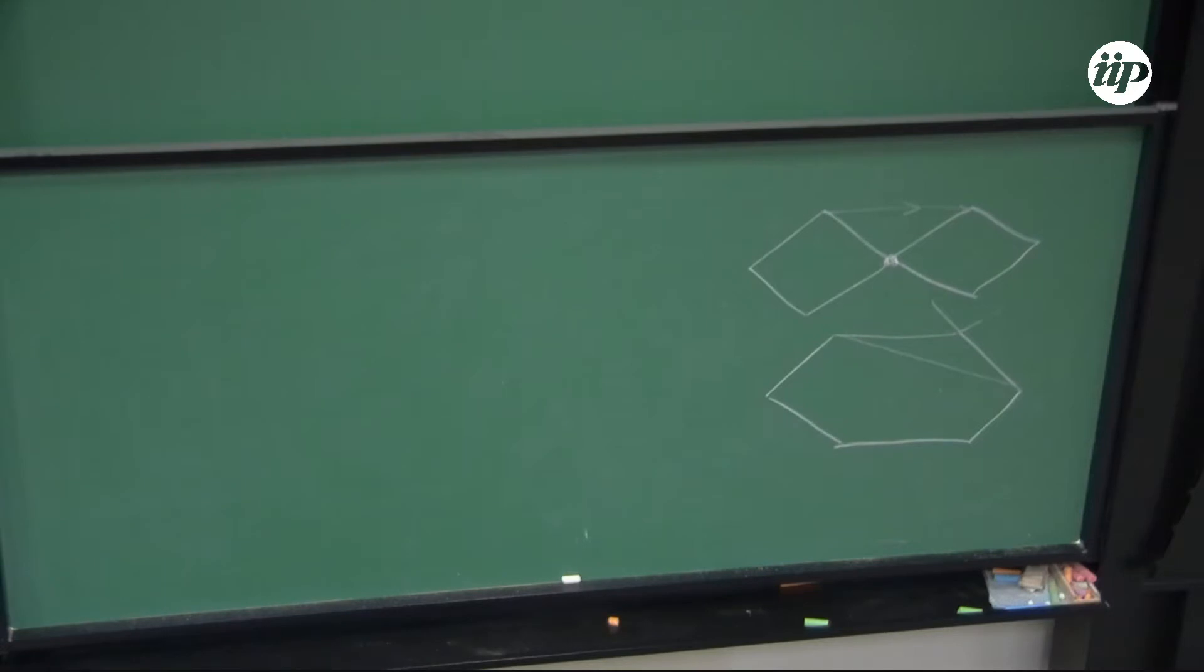But it's just a specific choice for our parameter, and the question now is why is p equals one-third special?